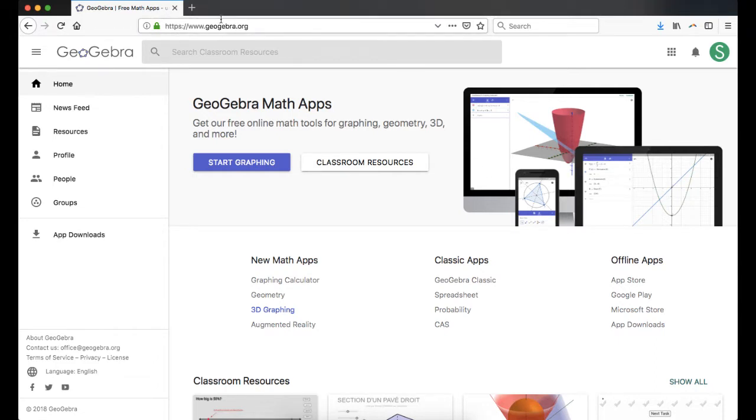So right now I'm at GeoGebra.org. I'm also in Firefox, usually I do these videos in Chrome, but for some reason Chrome is not showing like when I define a point, it's not showing that anymore in the algebra description. So hopefully that gets fixed at some point, but I'm going to use Firefox.